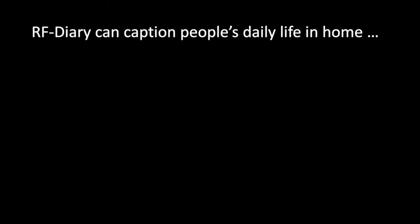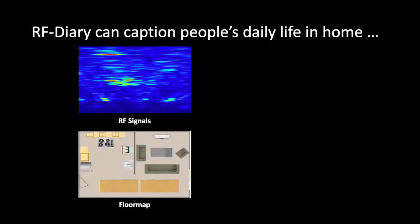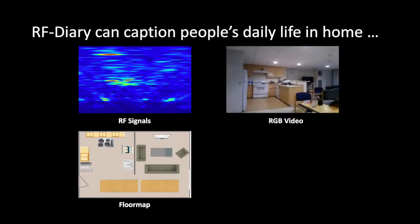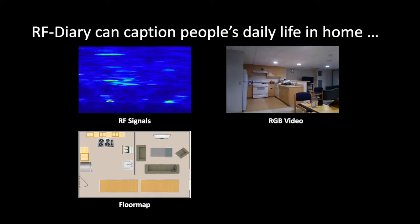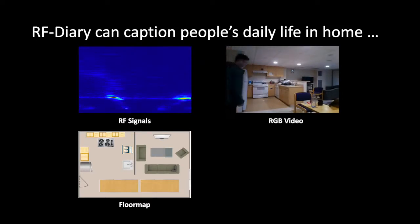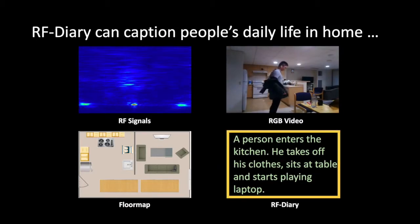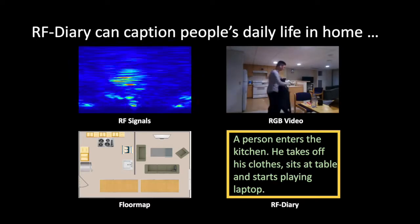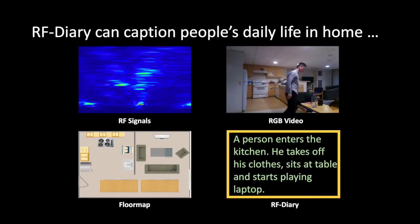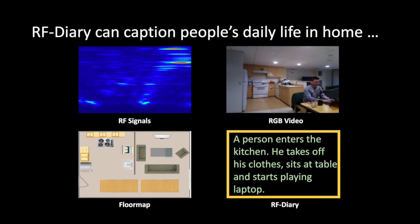Let me show you the first qualitative results. Here in the left is the RF signals and floor map, which is the input to our model. Here on the top right is the corresponding RGB videos so you guys can see what is happening. Let's see the model's output. It says a person enters the kitchen, he takes off his clothes, sits at table, and starts playing laptop, which captures the main activities the person is doing.